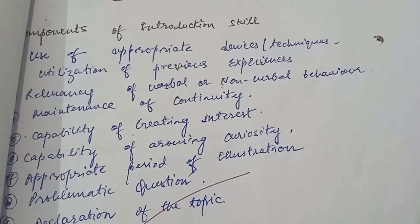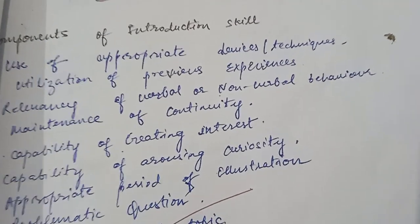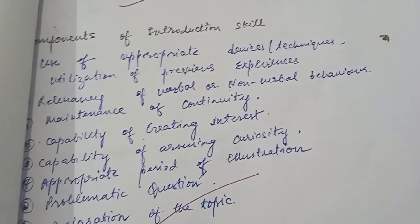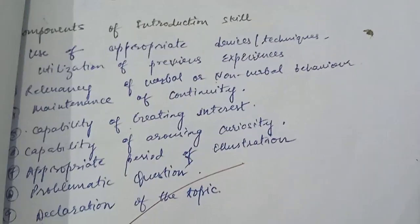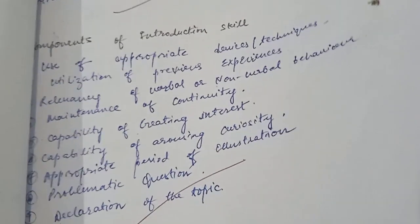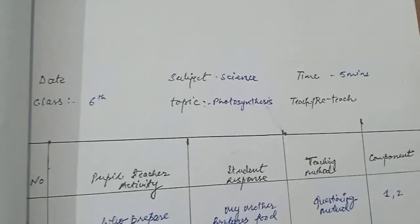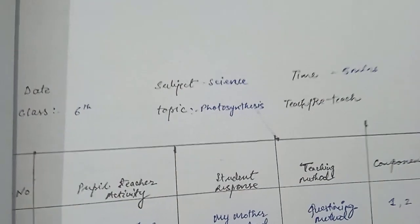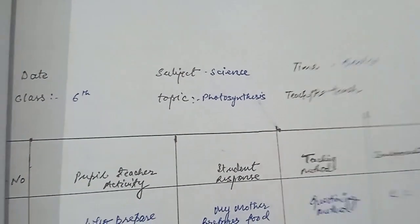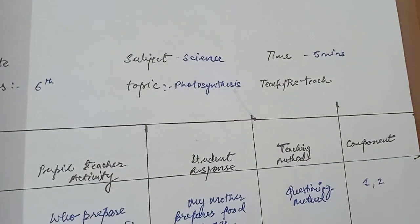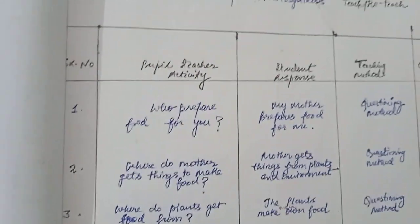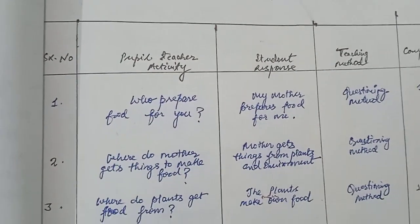These are the major components of the introductory skill which we have to follow while implementing the introductory skill in the micro lesson plan in the class. Now this is the second page of the presentation table. We will put the headings of date, class, subject, topic, time, teacher name.